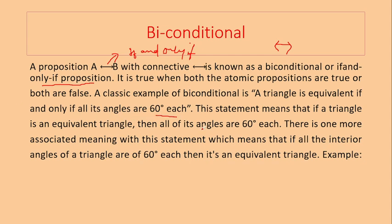This statement means that if a triangle is an equivalent triangle, there is one more associated meaning with this statement which means that if all the interior angles of a triangle are 60 degrees, then it is an equivalent triangle.